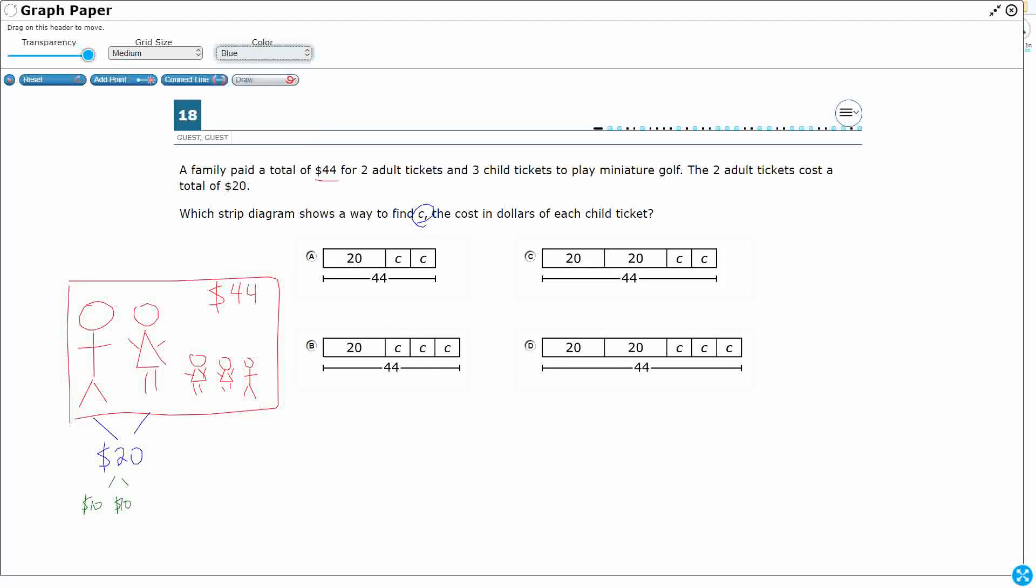Now, how much is going to be left for these kiddo tickets? Well, what do we know? We know that we've got $44 for the whole thing, and we've already used $20 for these adult tickets. So you see how we almost have like a part-part-whole here. So let's take, that's my 20. Let's do 44 minus 20 to see how much I've got left. That's going to be 24.